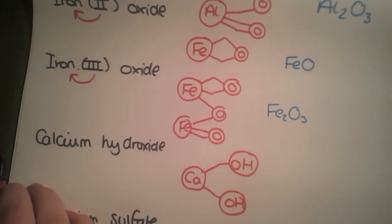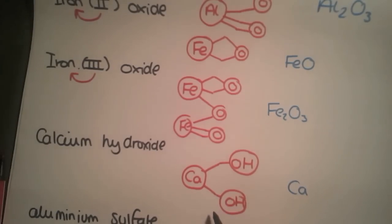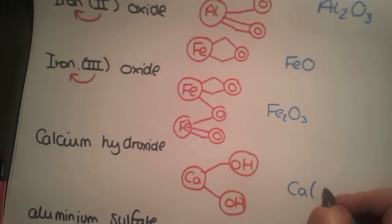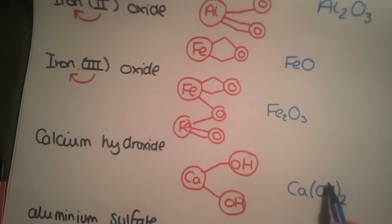Counting up what we have, we have calcium and we've got two OHs. To show that we've got two OHs, we need to put it into brackets and we put the two outside the brackets to show that it's two of this whole part here that we have.